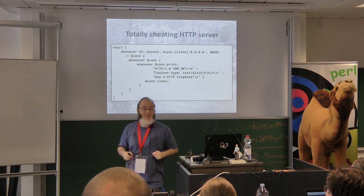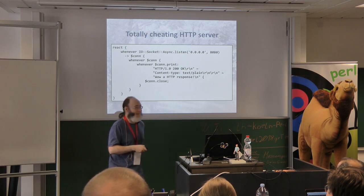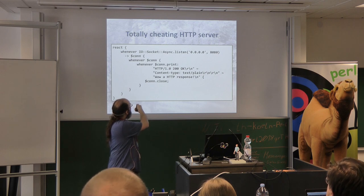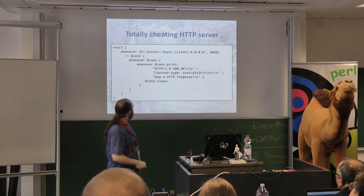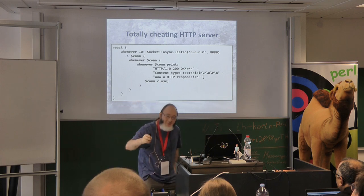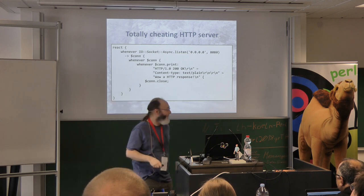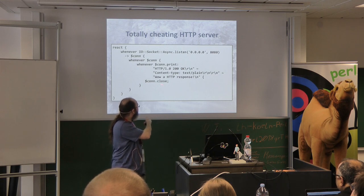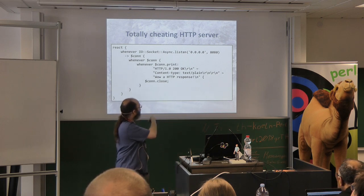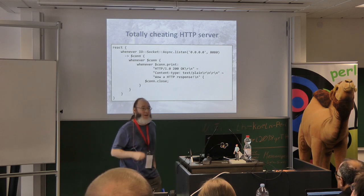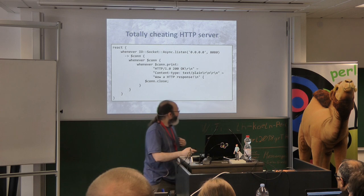Here's the world's worst HTTP web server — a total cheat, but it gives a bit of an idea. I say 'react', do a listen on an asynchronous socket, get a connection object. Whenever I get a new incoming connection, and whenever the connection emits some data, I print to that socket, then close it. It's terrible — we're sending back the response as soon as we get anything — but it illustrates the concept.